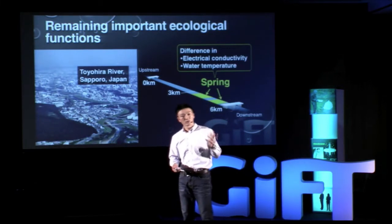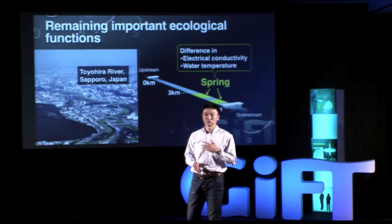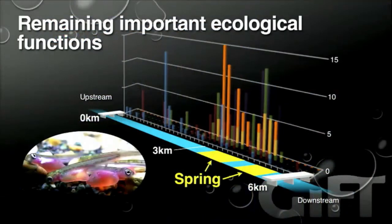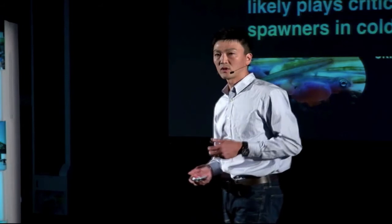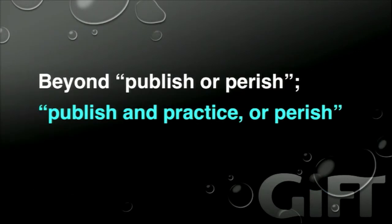This groundwater is very unique and differs in water chemistry and temperature regime compared to the stream water. We found that the locations where salmon spawn and lay eggs during the cold winter period match exactly with the locations of groundwater upwelling. This tells us that conservation of the groundwater system providing good habitat for salmon is critically important for maintaining their winter population.